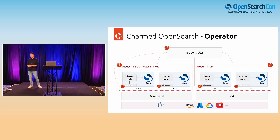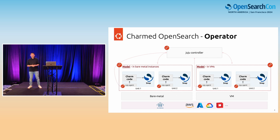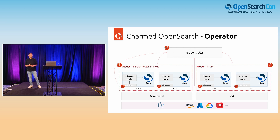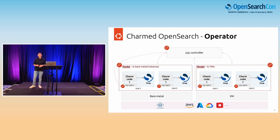The Charmed OpenSearch operator runs with Juju. It is cloud agnostic. The current version of the Charmed operator is VM and machines specific, meaning that it runs on any type of environment given that the substrate provides bare metal or VM instances — whether on premise or on AWS, Azure, OpenStack, it doesn't really matter.